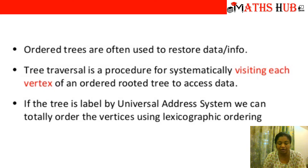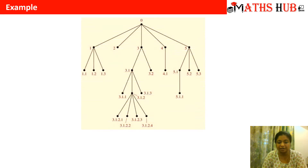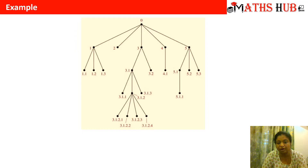What is this lexicographic ordering? If the universal address system is used, the vertices are marked lexicographically. For example, consider this tree. The root vertex has been marked with the number 0. From the root vertex, there are 5 children, marked left to right as 1, 2, 3, 4, and 5. The first node has further 3 children, marked as 1.1, 1.2, and 1.3 — the lexicographic system goes from left to right.